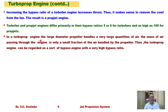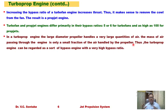In a turboprop engine, the large diameter propeller handles very large quantities of air. The mass of air passing through the engine core is only a small fraction of the air handled by the propeller. Almost 95% of air is handled by the propeller to generate thrust, and only 5% passes through the different components of the turboprop to generate additional thrust. Thus, the turboprop engine can be regarded as a bypass engine with a very high bypass ratio.